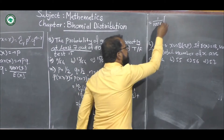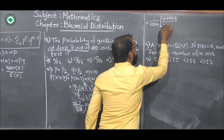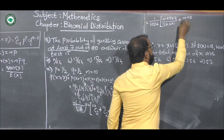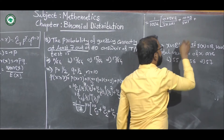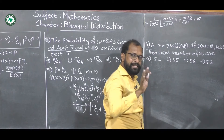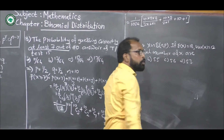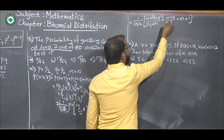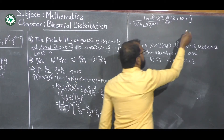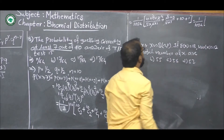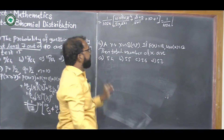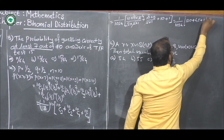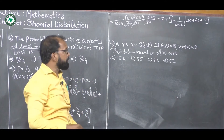Now, 10C3 = (10×9×8)/(3×2×1), 10C2 = (10×9)/(2×1), 10C1 = 10, and 10C0 = 1. Simplifying: 10C3 = 120, 10C2 = 45, 10C1 = 10, 10C0 = 1. Adding these gives 120 + 45 + 10 + 1 = 176.